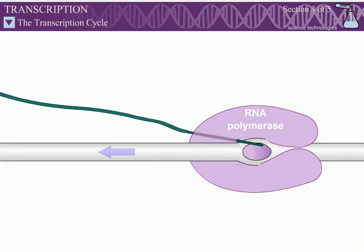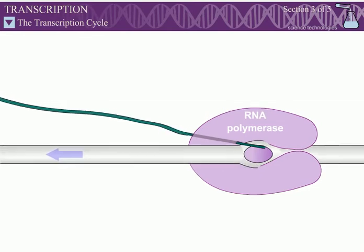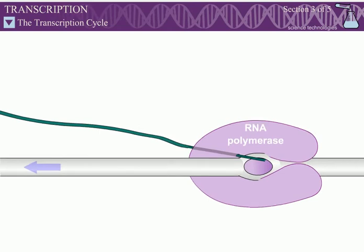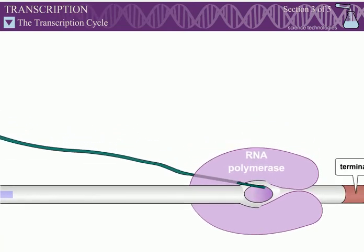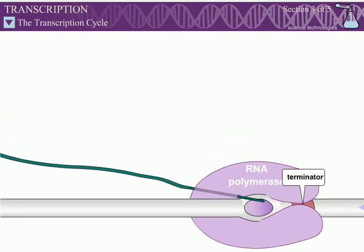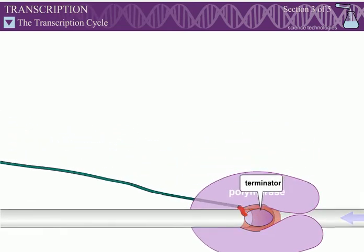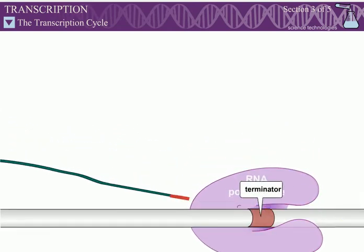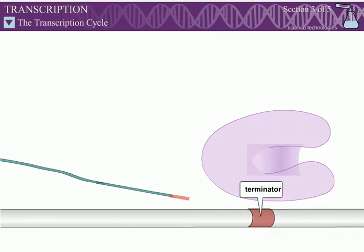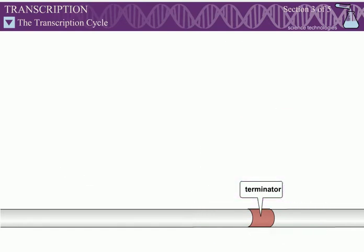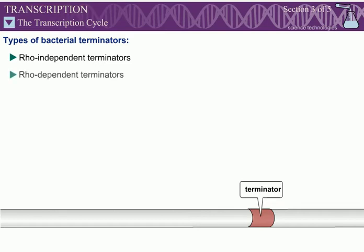Sequences called terminators trigger the elongating polymerase to dissociate from the DNA and release the completed RNA chain. This animation describes bacterial transcription termination. Bacteria have two types of terminators: rho-independent and rho-dependent.